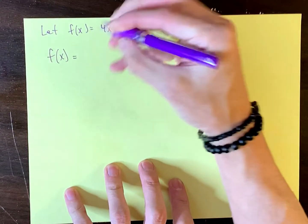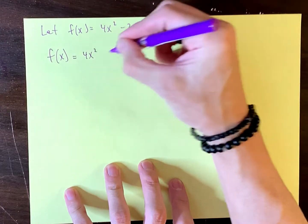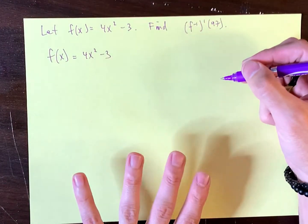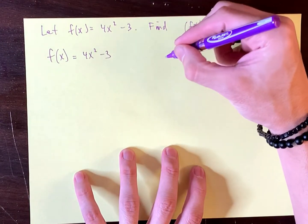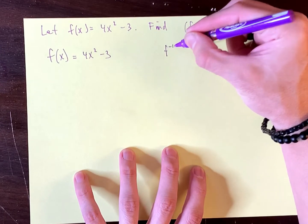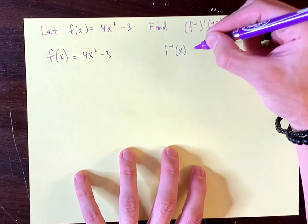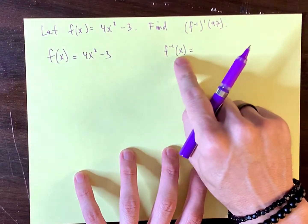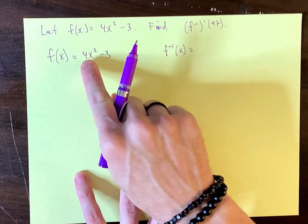We know that f of x is given to us as being 4x squared minus 3. And I know that you know how to find the inverse, not the derivative, no calculus yet, just math 3 or pre-calc. The inverse of this,